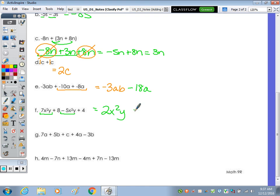In g, I'm going to combine in alphabetical order. So the a's, I have 7 and 4, which is 11. Now the b's, a positive 5b minus 3b would be a positive 2b. And then last, there's no term to combine with the c. So we just bring it along.